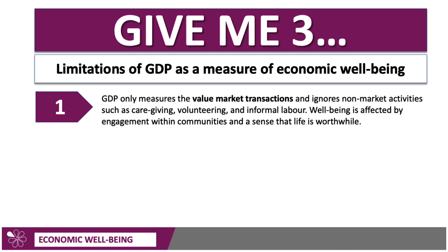One limitation of GDP is that it measures the total value of goods and services produced and spending on them in the economy. It only tends to measure the value of market transactions — the things that have a price in the market — and it tends to ignore non-market activities. Good examples include the value of people looking after an ill relative, caregiving, people who volunteer regularly for charities and other organisations, and critically, the informal labour market.